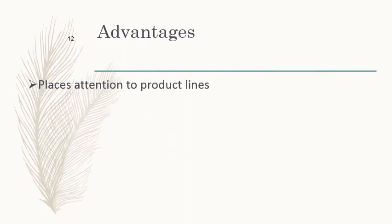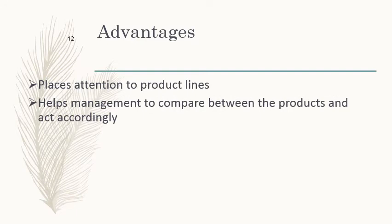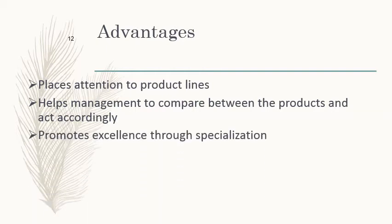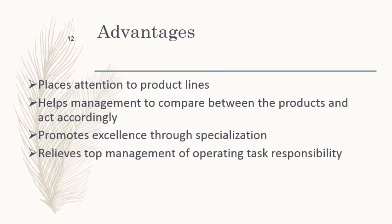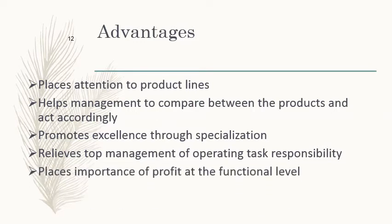Advantages: it places attention on individual product lines so you can concentrate on your own without worrying about others. It helps management compare performance between products and act accordingly. It promotes excellence through specialization — those specialized in soap are under soap, those in refrigeration are under refrigeration. It relieves top management of operating task responsibility, as each product line has its own general manager, and places profit responsibility at the functional level.